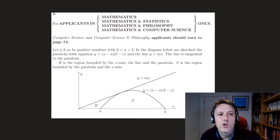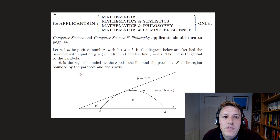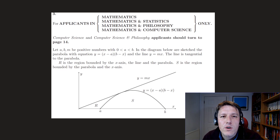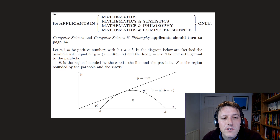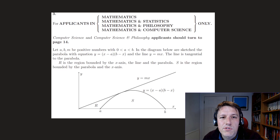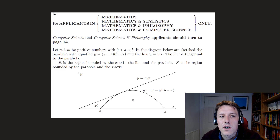In this question we've got a, b, and m as positive integers with 0 < a < b. The diagram below sketches a parabola with equation (x − a)(b − x) and also the straight line y = mx. We're told that this straight line is a tangent to the parabola, and we've labelled these two regions r and s.